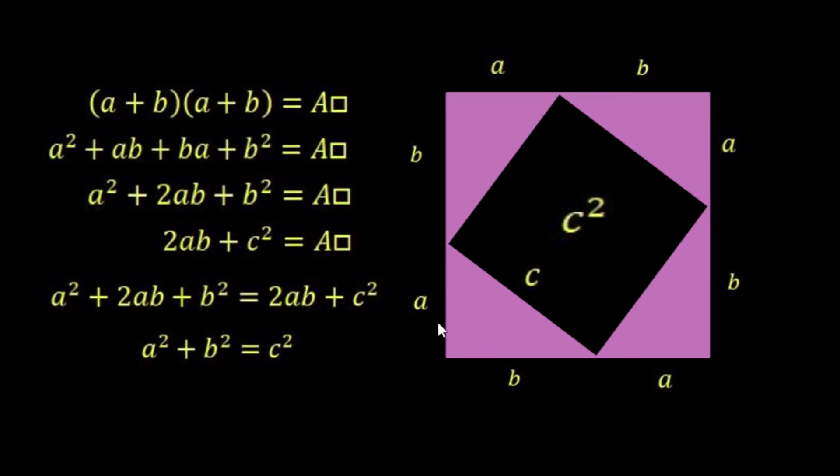For example, if I was to take one of the triangles and move it outside, then you can see here that this area c² is no longer c². It's actually larger. In effect, the black area has become larger. So we can't just move the triangles outside the remit here of our original rectangle.